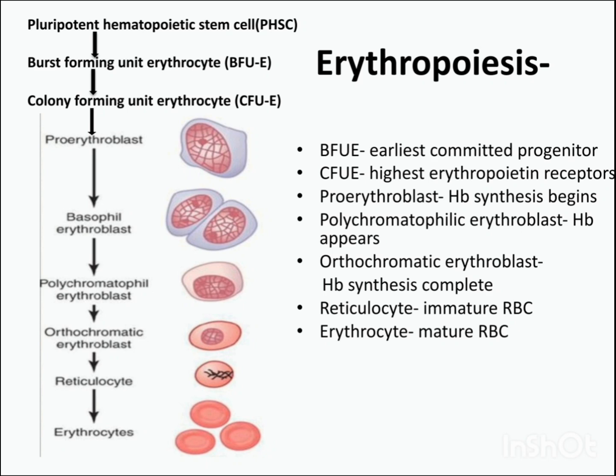Now coming to erythropoiesis, which refers to the formation of red blood cells. The first cell is the pluripotent hematopoietic stem cell, which leads to burst forming unit erythrocyte, the earliest committed progenitor. From there we get colony forming unit erythrocyte, which has the highest erythropoietin receptor. From CFU-erythrocyte we get proerythroblast, where hemoglobin synthesis begins. From proerythroblast we get basophilic erythroblast, and then polychromatophilic erythroblast, where hemoglobin first appears.